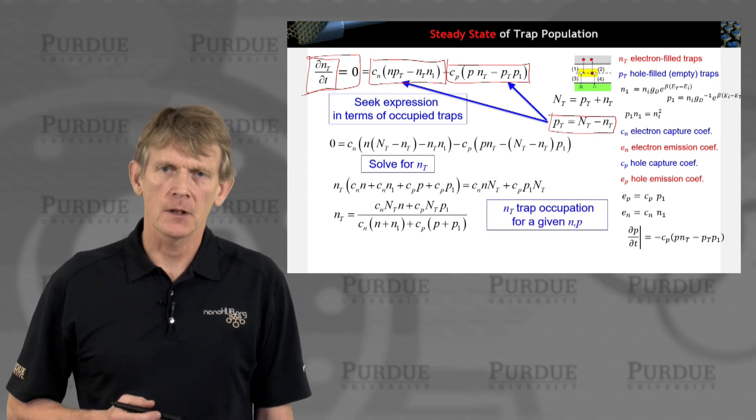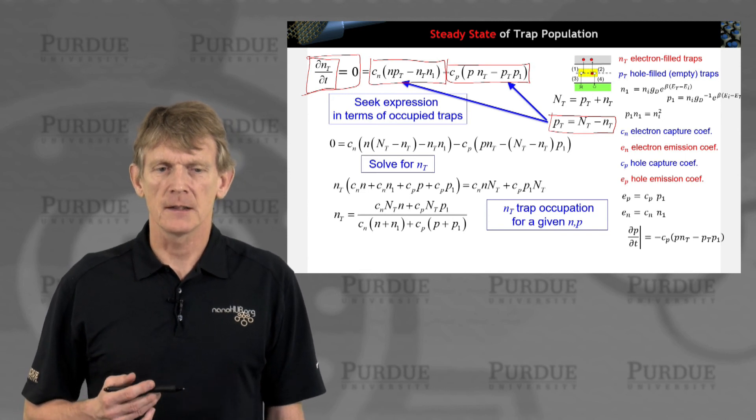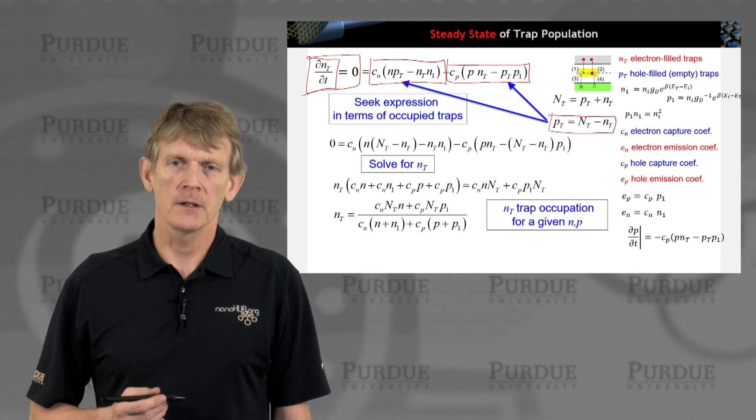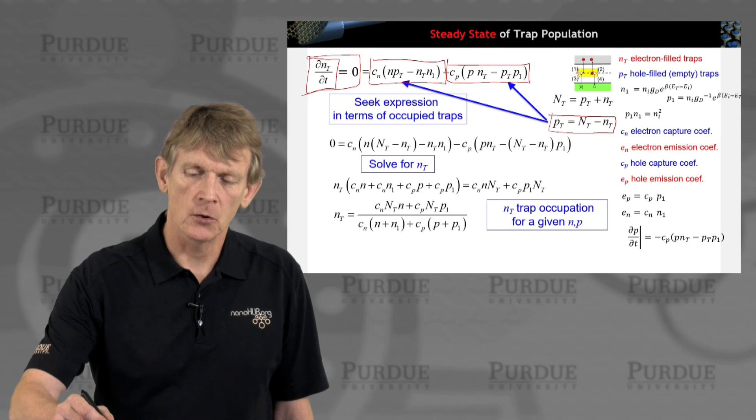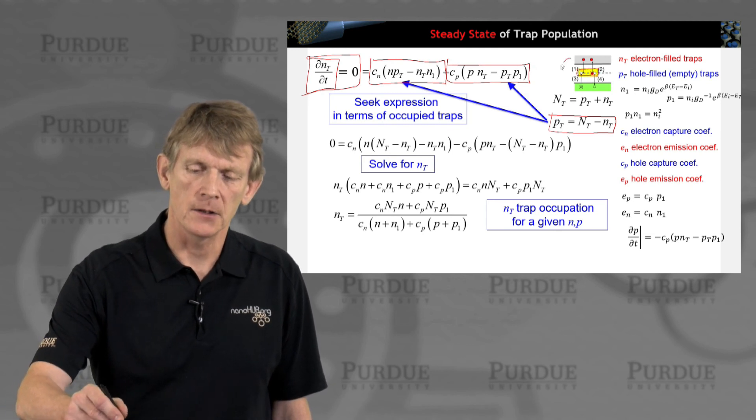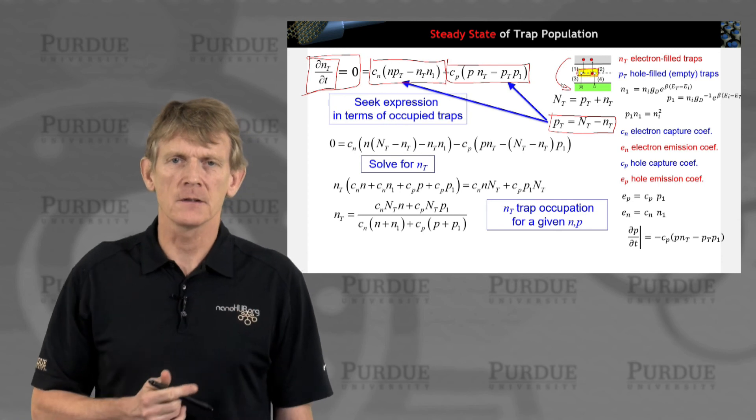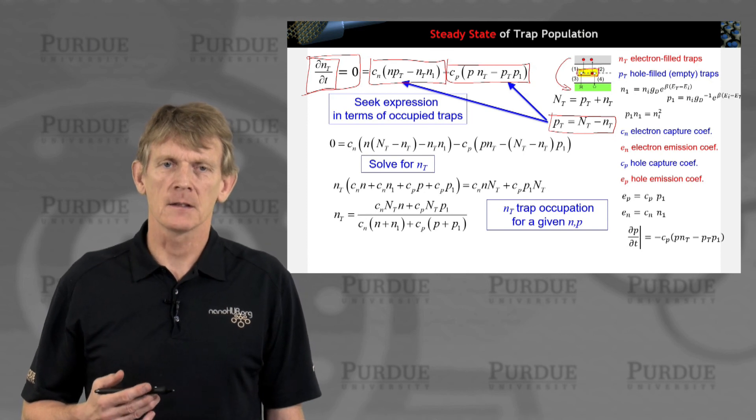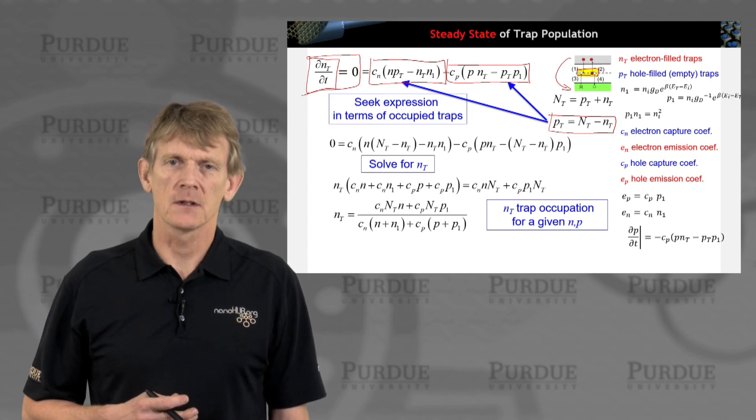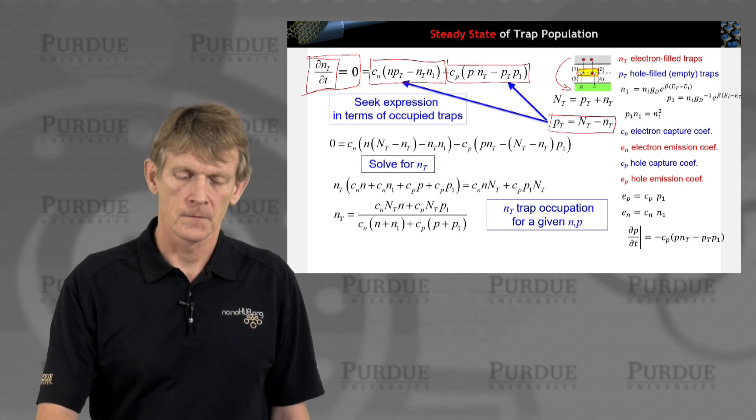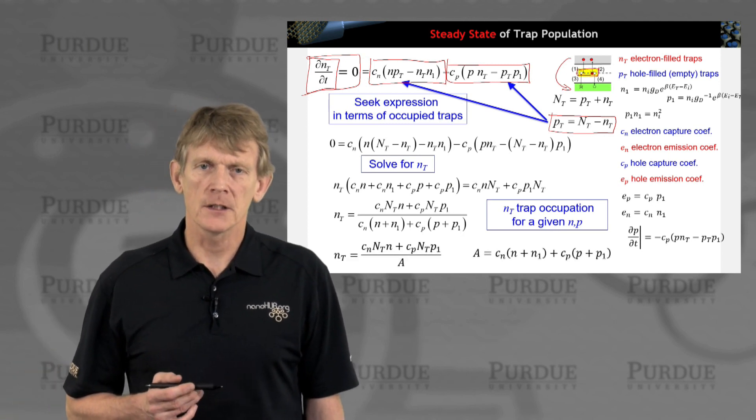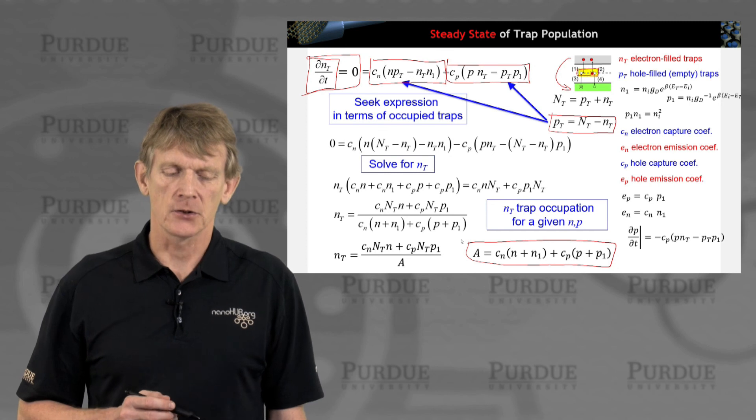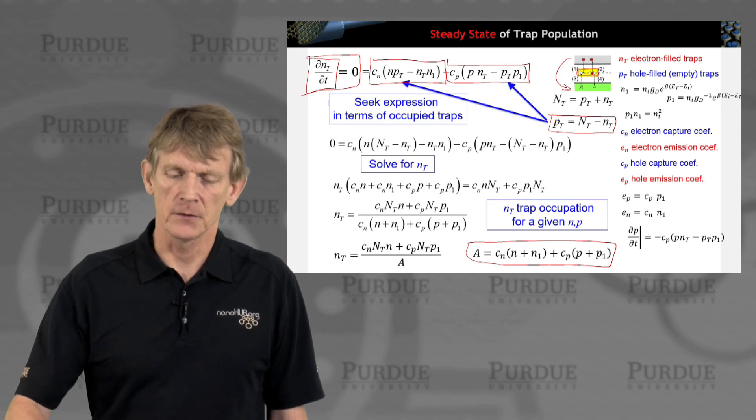We could stop here if our interest would be just to look at some properties of traps, but that's not quite what we're after yet. We ultimately don't care so much about what's going on here, but we care about a relationship of overall electron recombination. But the trap occupation is something that is the intermediary to this trap assisted tunneling. We'll need to work a little bit longer and we define a coefficient capital A here. It's just a shorthand that we'll use again in the next few slides.